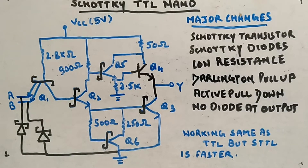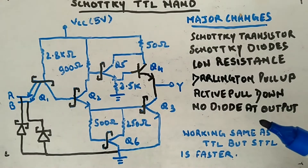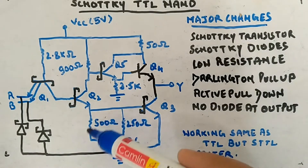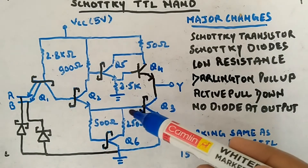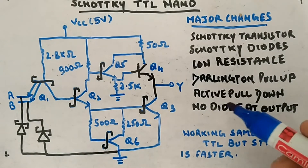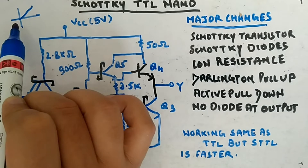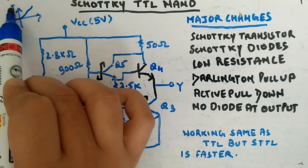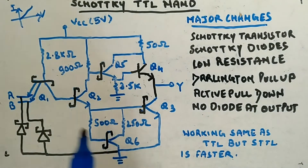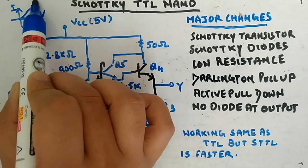With the Darlington pair you have very low resistance seen from output Y looking upward — the input resistance divided by beta-squared — so resistance reduces to just a few ohms, meaning more current comes from the supply. That's the reason the Darlington pull-up is there: more current gain, or equivalently very low resistance. Active pull-down: instead of a resistance you are using a transistor, that's why it is called active pull-down. When this transistor is active, it will draw more current corresponding to the active pull-up.